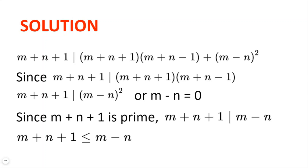Because m plus n plus 1 is prime and divides m minus n squared, it must be a prime factor of m minus n squared. Now the prime factors of m minus n squared are the same as the prime factors of m minus n, and so m plus n plus 1 divides m minus n. But this means that m plus n plus 1 must be less than or equal to m minus n, which cannot be true since m and n are natural numbers. So we get a contradiction, and therefore m must equal n, which is what we needed to prove.